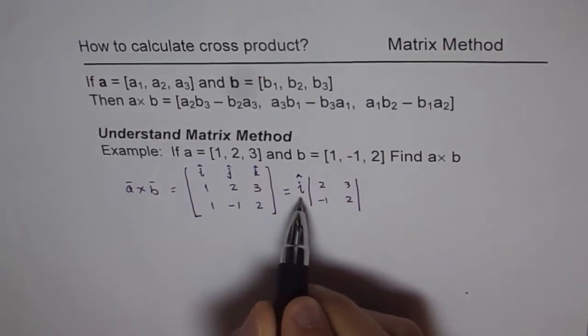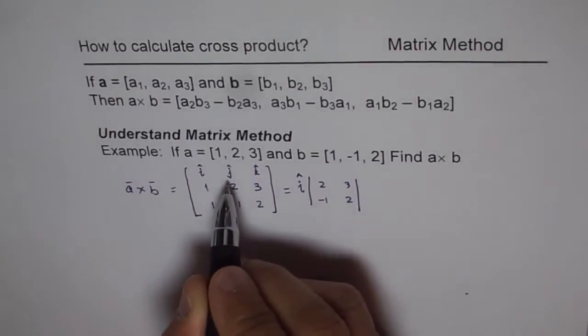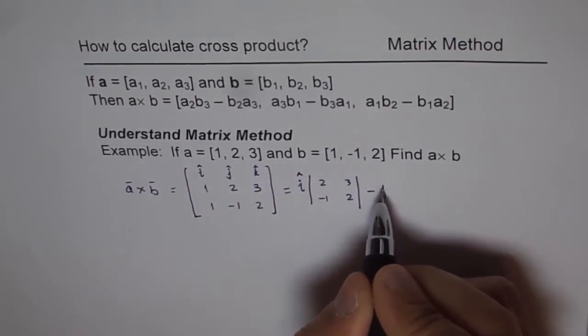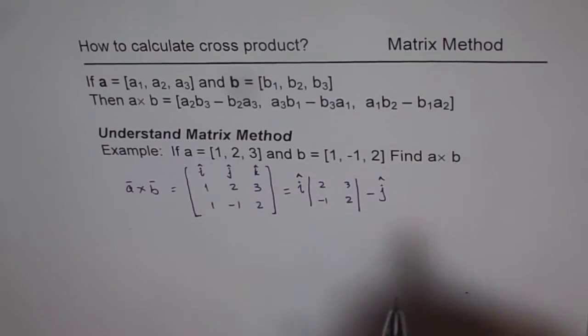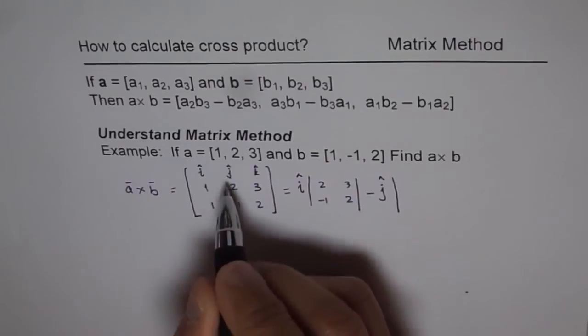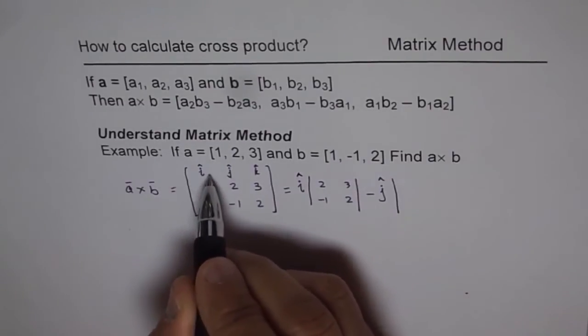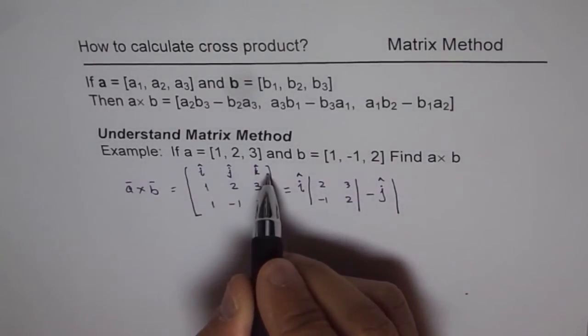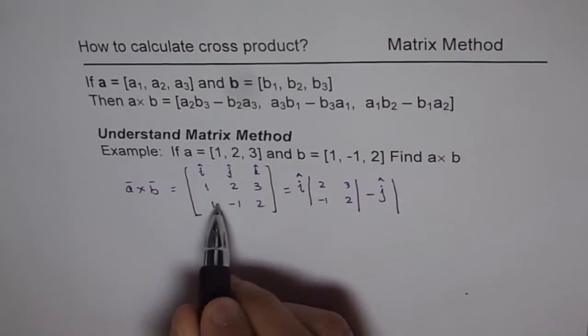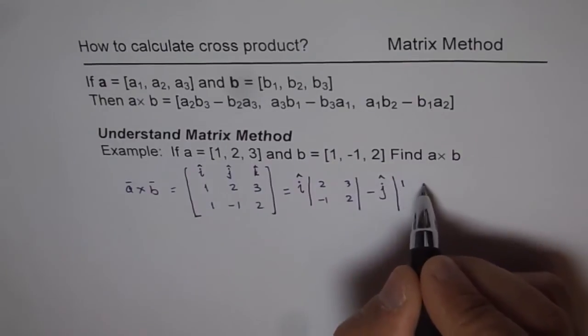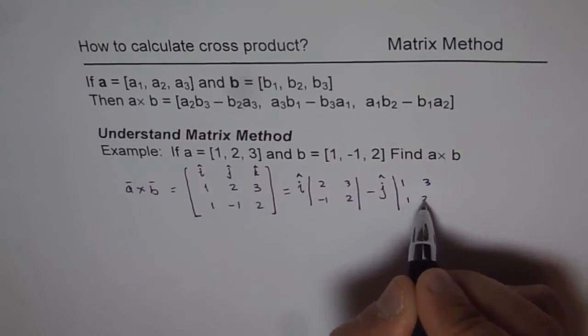That's in the direction of vector i, that is x. In the next component, you'll write with minus j. So it's a nomenclature. You write plus, minus, plus, minus as you move on. And then hide these two things - the row in which j is there and the column in which j is there. So you're left with these four things here. Put them in a box, kind of like this: 1, 3, 1, and 2.